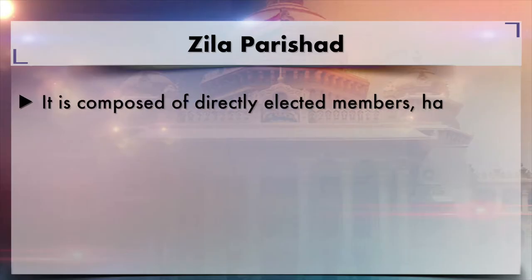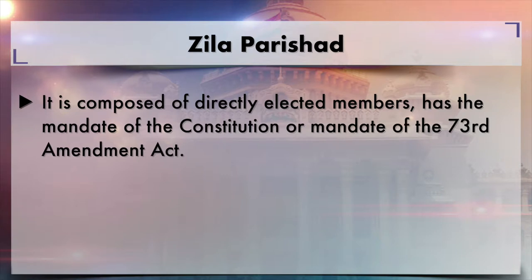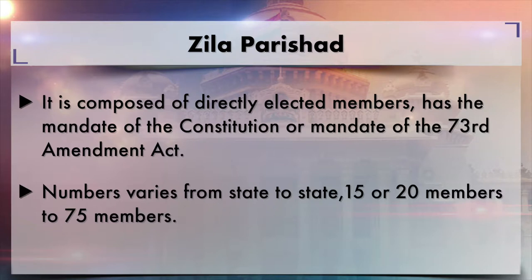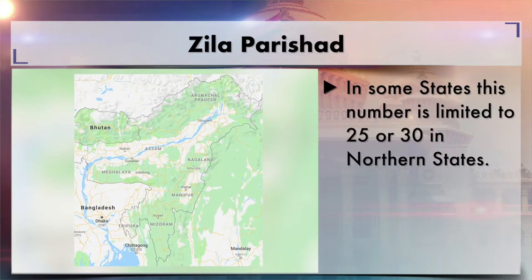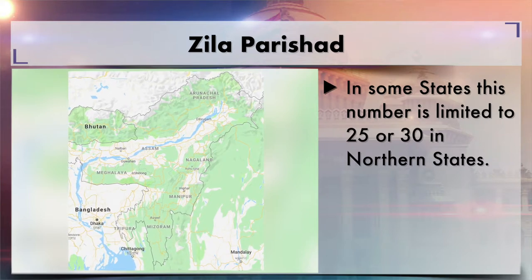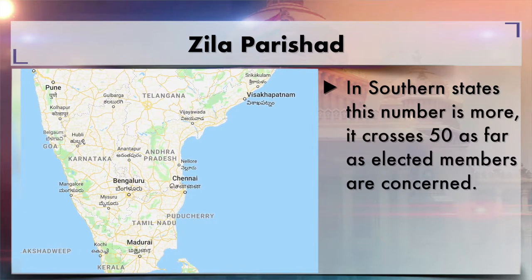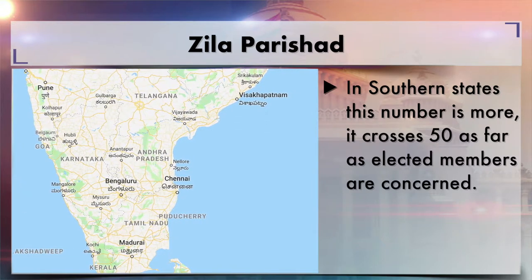Before we discuss its role and functions, we come back to the composition of Zilla Parishat. It is composed of directly elected members, as mandated by the 73rd Amendment Act, and this number varies from state to state — from about 15 or 20 members to 75 members. In northern states the number is limited to 25 or 30, while in southern states it crosses 50 elected members.